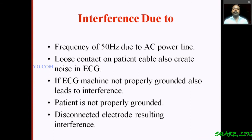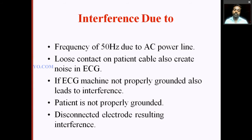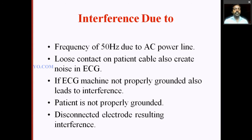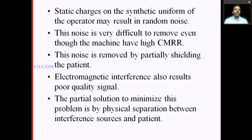The isolation amplifier separates the low voltage side from the display devices. High voltage and high frequency signals use a separate ground. If the patient is not properly grounded, there are higher chances of interference. A disconnected electrode also results in interference. When some electrode on the body is removed or disconnected, that disconnected electrode creates interference.